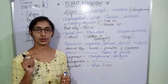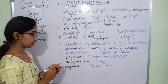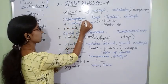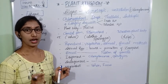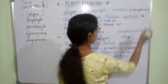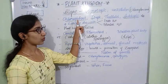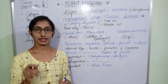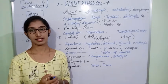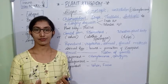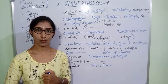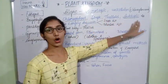The algae are unicellular organisms and they are microscopic in nature. Algae are chlorophyllous, simple, and thaloid in nature, and they are autotrophic organisms. Chlorophyllous means these are living organisms which consist of chlorophyll pigments, and since they have chlorophyll they are capable of producing or synthesizing their own food.